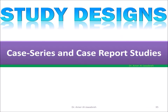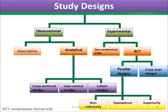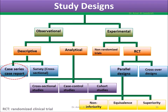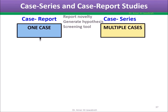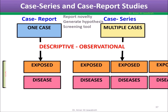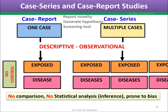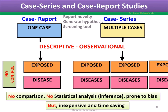Case series and case report studies. Both are observational and descriptive studies. Their purpose is to report novel findings, generate hypotheses, or serve as a screening tool. A case report describes one case only, while a case series deals with multiple cases. Both do not have controls; therefore, there is no comparison, no statistical analysis or inference, and they are both prone to bias. However, they are inexpensive and time-saving.